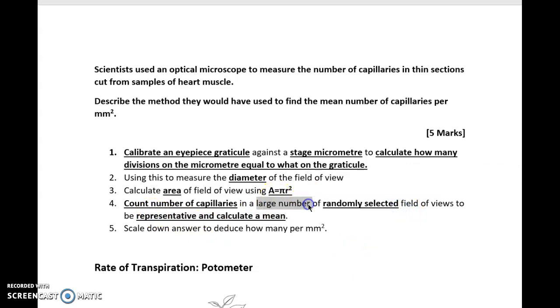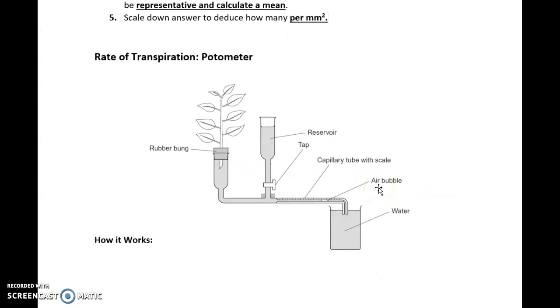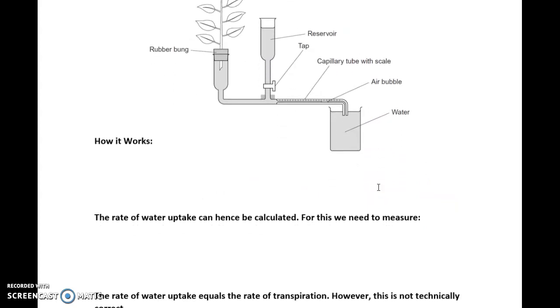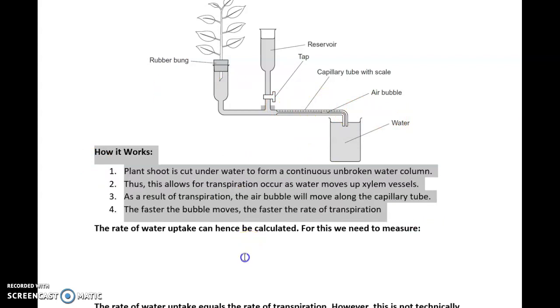Then we count the number of capillaries that we can see in that field of view. It's nice to state that you pick a randomly selected field of view, again, to be representative. The importance of a large number, again, is because you want to find the mean. Once you've got that within the area, you can scale it down to find out how many there are per one millimeter squared, because obviously you'll have a higher number for the area of the field of view. Another thing that is commonly asked is the potometer. This is used to measure the rate of transpiration-ish. It mainly really does the rate of water uptake, and you look at how far the bubble moves along this capillary tube.